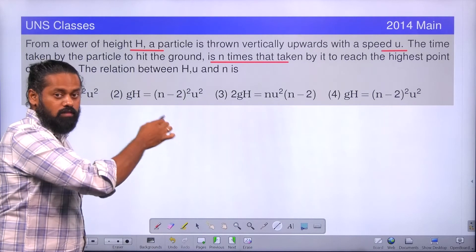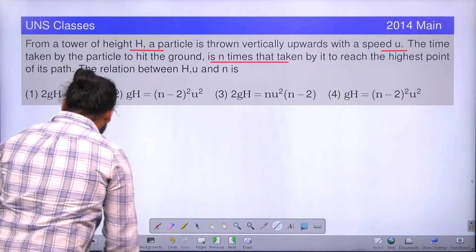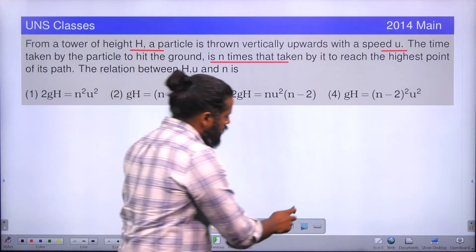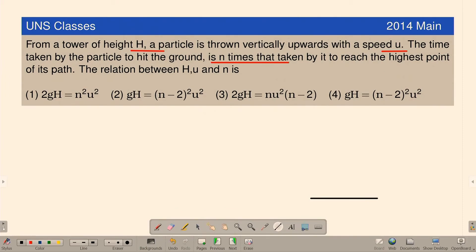It's a question from 2014 JEE Mains. Assume that you have a tower. See from the bottom, this is the height of the tower. From the tower, you are throwing a body in the upward direction and that body comes back to ground.